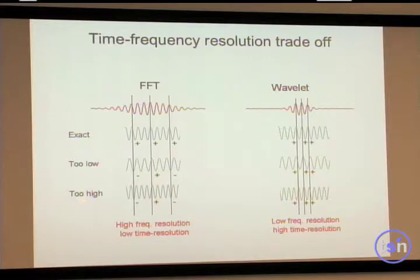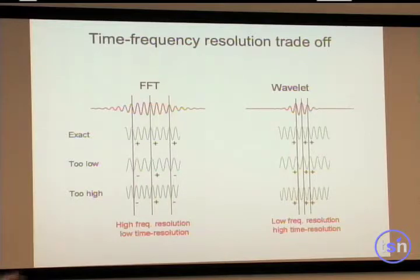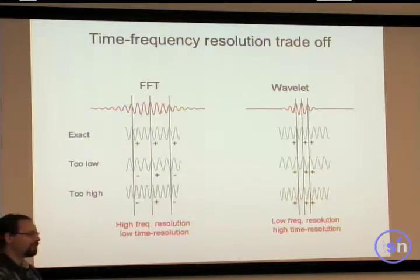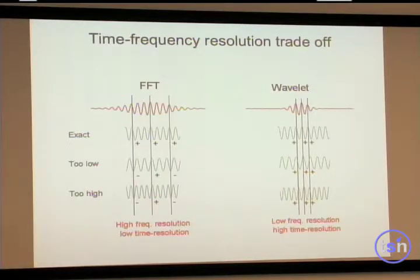Both respond to a signal with the perfect matching carrier frequency, but when we make the frequency lower, the FFT is more selective than the wavelet. At higher frequencies the FFT also gives a sharper image in the frequency domain, while the wavelet gives a broader peak. So which should you use — wavelets with high time resolution and low frequency resolution, or FFT with low time resolution and high frequency resolution?